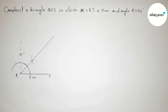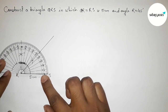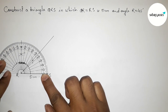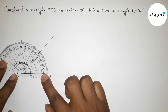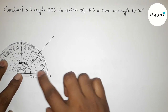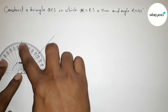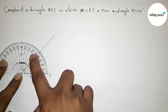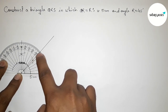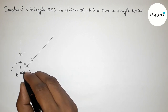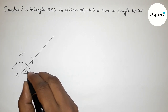Now checking with the help of a protractor whether it is 45 degrees or not. This is perfectly 90 degrees and this is perfectly 45 degrees. So angle R equals 45 degrees.